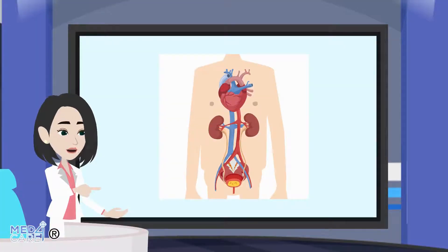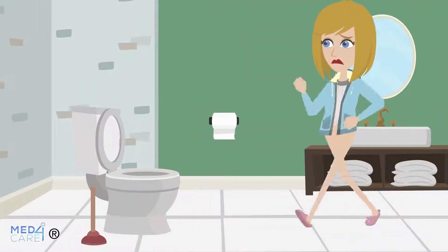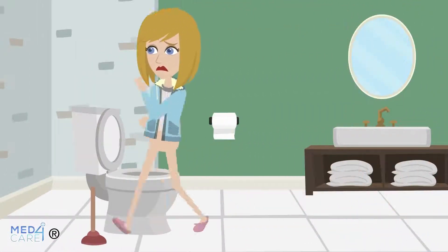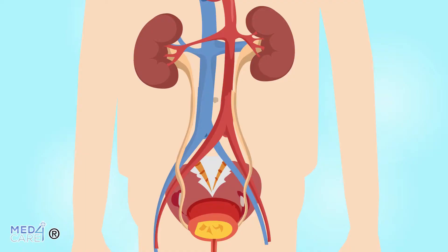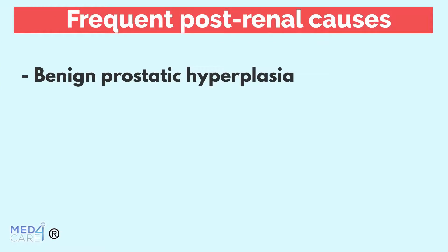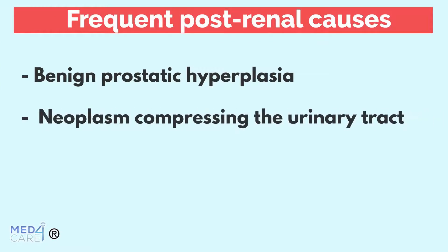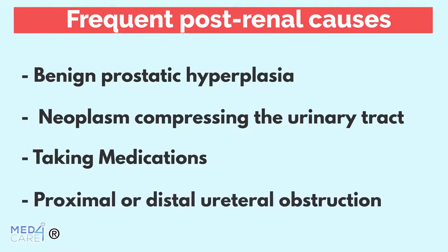Finally, post-renal causes include those conditions in which urine is produced normally but cannot be expelled due to obstructions in urinary tracts. Possible causes can be, for example, benign prostatic hyperplasia, a neoplasm compressing the urinary tract, or proximal or distal ureteral obstruction.